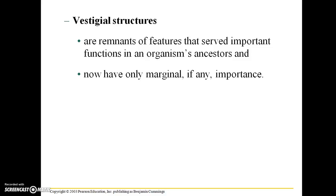Vestigial structures are another subcategory within comparative anatomy. They are remnants of features that once served important functions in an organism's ancestors and now have only marginal, if any, importance. For example, modern-day whales evolved from mammals that walked on land. If you look through the fossil record, older whales have more prominent vestigial hind limb bones within their flippers, while more modern whales have had more evolutionary time to develop away from those structures and have fewer bones that resemble those of land mammal legs.